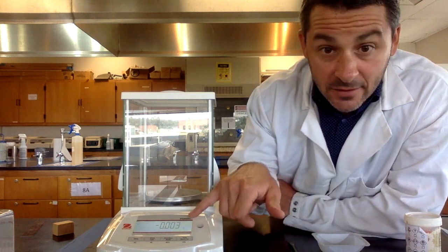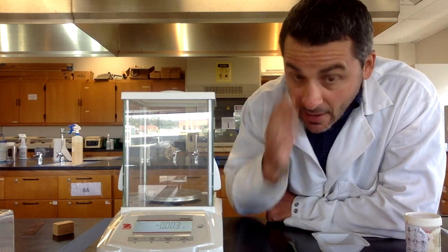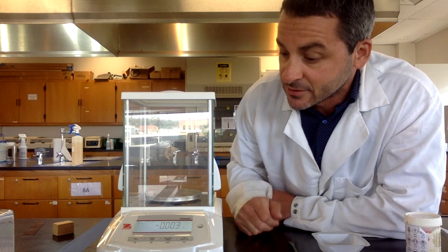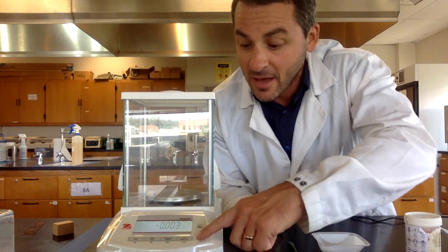The first thing you see here on the balance is the weight on the balance. We usually weigh things out in grams and you see it says negative, which is not usually a good thing. There's nothing on there. We want it to weigh zero. So in order to do that, you can hit the zero button on the balance and now it says zero, which is a good thing because nothing is on there.